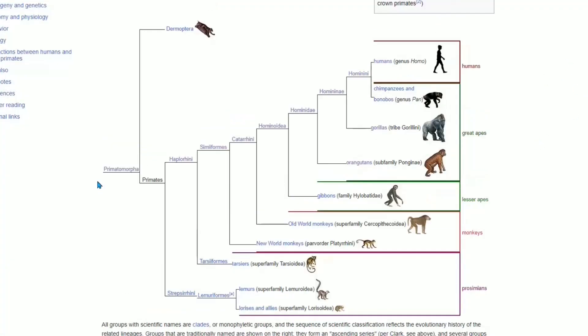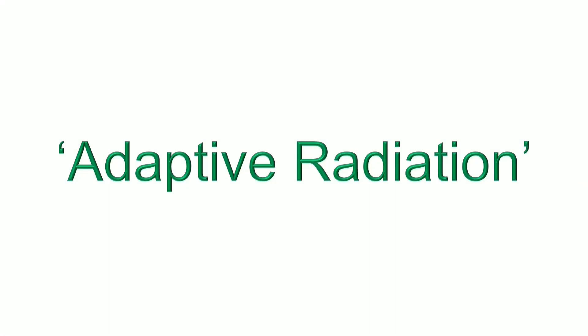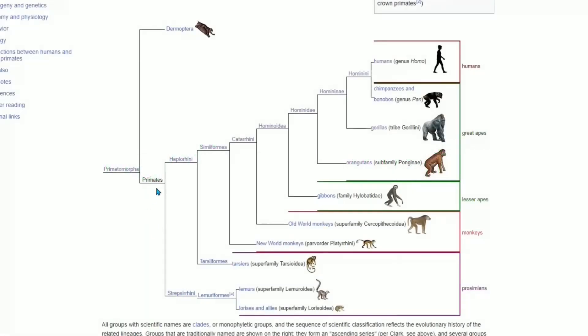Over to Wikipedia: primate Euarchonta is the supergroup that we belong to, and primates are part of that. This group emerged almost entirely after the Cretaceous-Paleogene extinction event 66 million years ago. The adaptive radiation resulting from that event caused a rapid acceleration and diversification of life, including into primates.